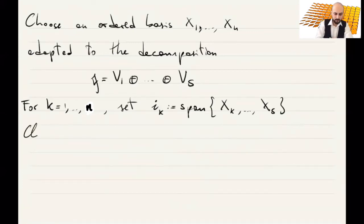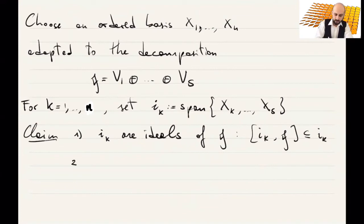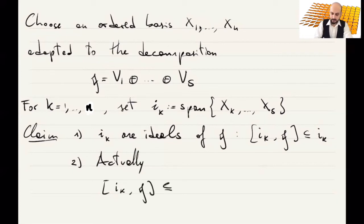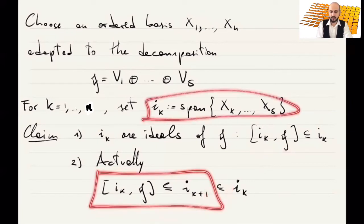I'll state and prove some properties of these sets. Property one: the sets Iₖ are ideals of g. Namely, [Iₖ, g] ⊆ Iₖ. Actually, something even stronger is true: [Iₖ, g] is contained in Iₖ₊₁, which of course is a subset of Iₖ. This stronger property holds for these spaces Iₖ defined with the adapted basis.